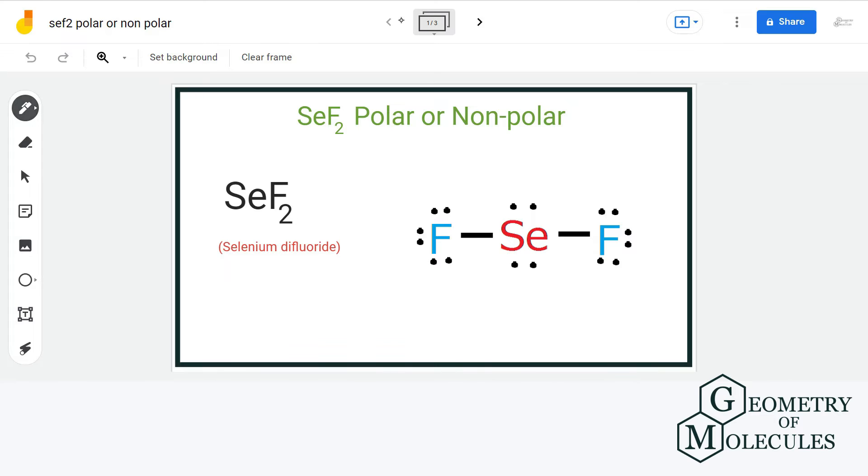If we look at the electronegativity of selenium, it is 2.55, and that of fluorine is 4. Now the difference is quite high to induce polarity in the bonds. Thus, each selenium-fluorine bond is polar in nature.